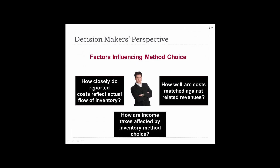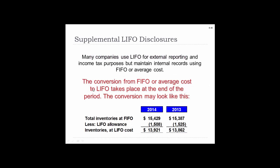From a decision-making perspective, why would you choose one method over another? Factors that influence the decision include: how closely reported costs reflect actual flow of inventory, how income taxes are affected by the different inventory methods, and how well costs are matched against related revenue. Many companies use LIFO for external reporting and income tax purposes, but maintain internal records at FIFO. The convergence from FIFO or average cost to LIFO takes place at the end of the period.